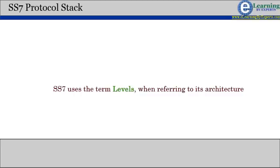SS7 uses the term levels when referring to its architecture. The term levels should not be confused with OSI layers, because they do not directly correspond to each other.